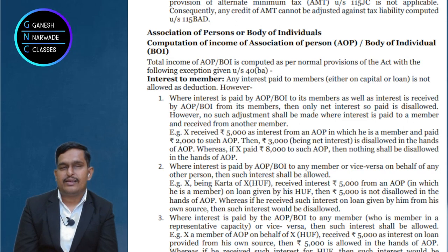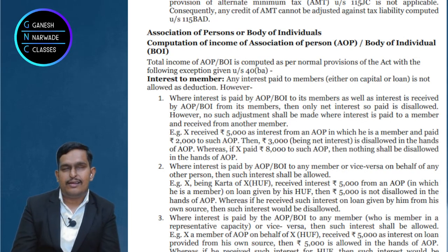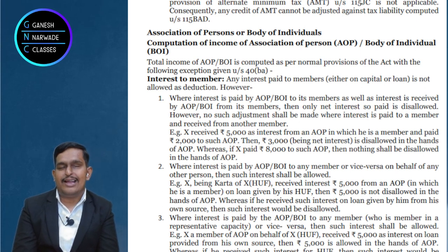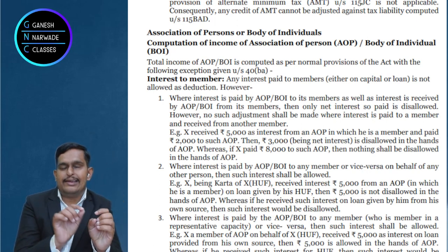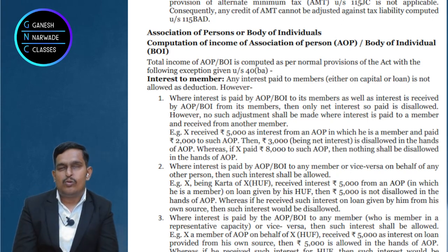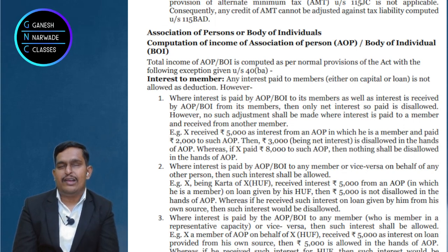The AOP/BOI income will be assessed as per the normal provisions of income tax, but 40BA disallowance will also be applicable. The first disallowance is about interest. If the AOP — that means Vidya Bharati — pays any interest to Ram, Shyam or Ganshyam, that interest is disallowed. That means, when we calculate the income of Vidya Bharati, the interest paid to these members will be added back.